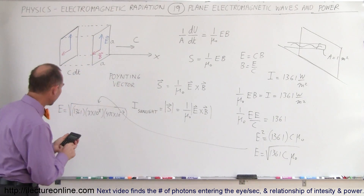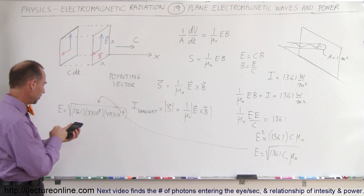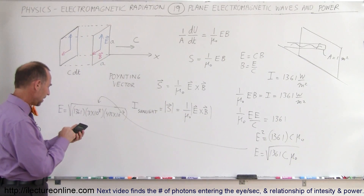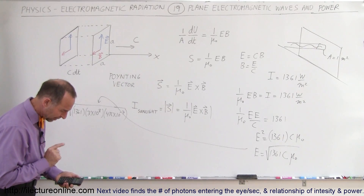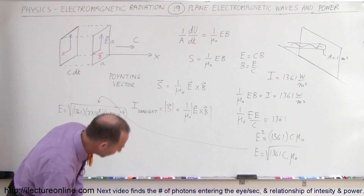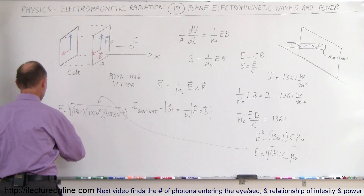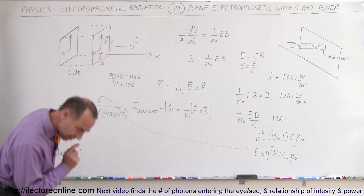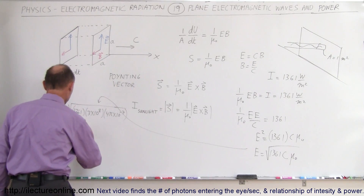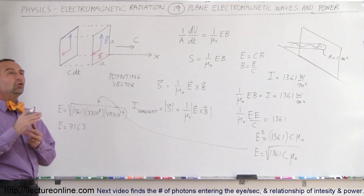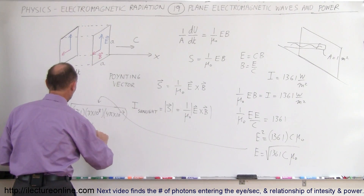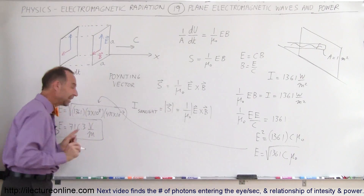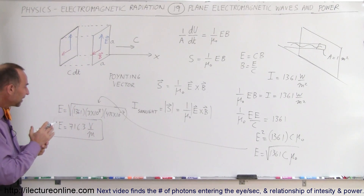Using a calculator: 1,361 times 3×10⁸ times 4π×10⁻⁷, then taking the square root, gives a value of 716.3. So E is equal to 716.3 volts per meter — volts per meter being a better way to express it than newtons per coulomb. These are the RMS values of the oscillation of the electric field in sunlight.